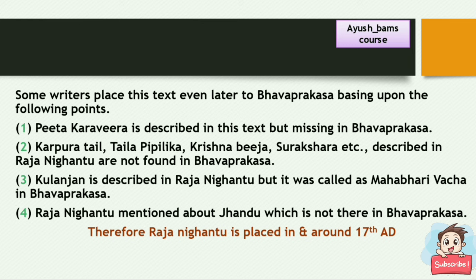The points for placing Rajanikandu later than Bhavaprakasha: Peeta Karavira is described in Rajanikandu but missing in Bhavaprakasha; Karapura Taila, Taila Pippalika, Krishnabija, and Surakshara described in Rajanikandu are not found in Bhavaprakasha; Kulanjan is described in Rajanikandu but was called Mahabhari Vatsha in Bhavaprakasha; and Rajanikandu mentions Jhandu, which is not in Bhavaprakasha. Therefore, Rajanikandu is placed around the 17th century.